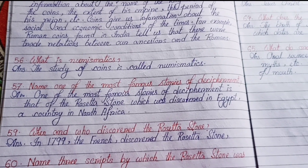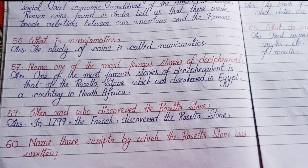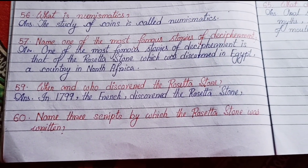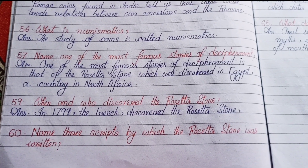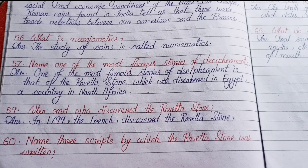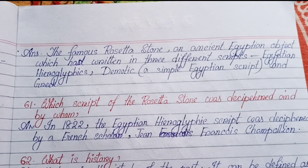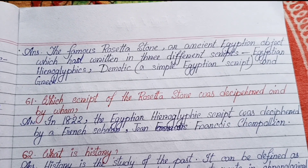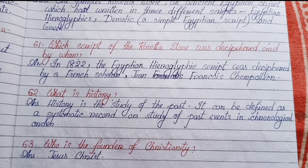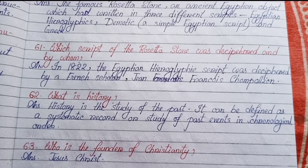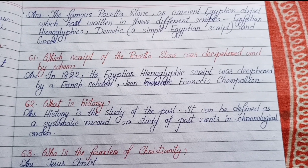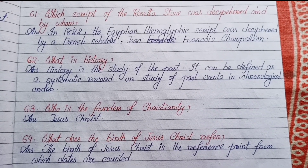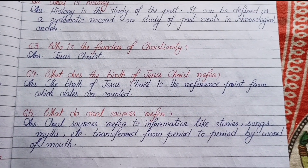Number fifty-six: What is numismatics? The study of coins is called numismatics. Number fifty-seven: Name one of the most famous stories of decipherment. One of the most famous stories of decipherment is that of the Rosetta Stone, which was discovered in Egypt, a country in North Africa. Number fifty-nine: When and who discovered the Rosetta Stone? In 1799, the French discovered the Rosetta Stone. Number sixty: Name the three scripts in which the Rosetta Stone was written. The Rosetta Stone had writing in three different scripts: Egyptian hieroglyphics, Demotic (a simple Egyptian script), and Greek. Number sixty-one: Which script of the Rosetta Stone was deciphered and by whom? In 1822, the Egyptian hieroglyphic script was deciphered by a French scholar, Jean-François Champollion.